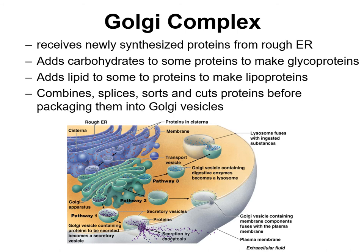The Golgi complex receives newly synthesized proteins from the rough ER in vesicles and then further processes those proteins. Sometimes it adds carbohydrate to proteins to make glycoproteins, adds lipids to make lipoproteins, combines, sorts, splices, and cuts proteins. After processing, these proteins are packaged for delivery. If those proteins are going to be secreted outside of the cell, they are put in a secretory vesicle, which migrates to the plasma membrane, merges with it, and dumps its contents outside the cell.